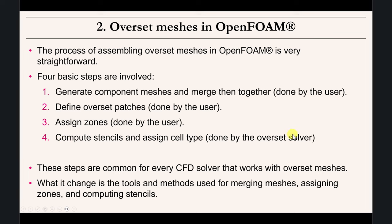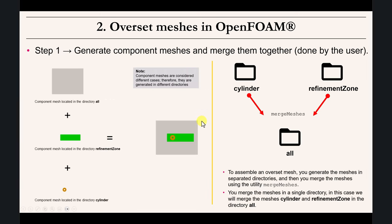The final step is computed by the overset solver: it computes the interpolation stencils and assigns cell types. The solver assigns different types to the cells — it can be a hole cell, an interpolation cell, or a calculated cell. The naming depends on the implementation.